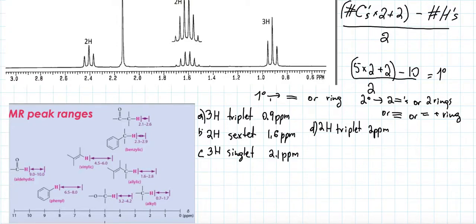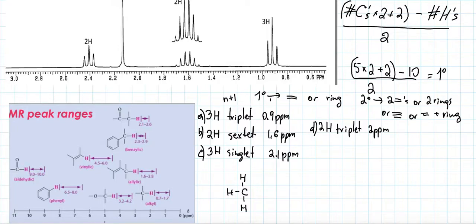Starting with signal A: three hydrogens, triplet, 0.9 ppm. I'll draw a carbon with three hydrogens. For those three hydrogens to be a triplet, by the n+1 rule they must be next to two neighboring hydrogens. So I'll draw an adjacent carbon with two hydrogens. At 0.9 ppm, the ppm chart shows a CH in an unremarkable environment — no special functional group nearby.